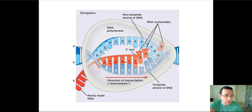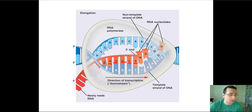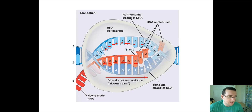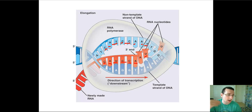T gets paired to A, A gets paired to U — remember that U is used in RNA because it's more stable when unpaired — G becomes C, and T becomes A, and so forth. If you pay attention to the non-template strand, you'll see that its sequence closely matches the sequence of the growing RNA, with T in the non-template strand corresponding to U in the RNA.